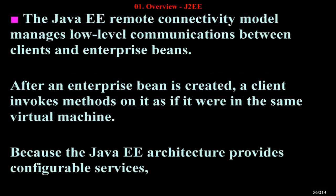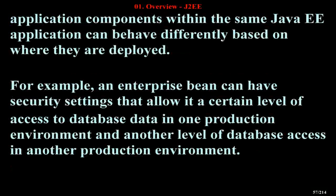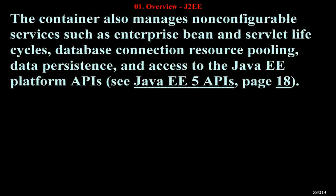After an enterprise bean is created, a client invokes methods on it as if it were in the same virtual machine. Because the Java EE architecture provides configurable services, application components within the same Java EE application can behave differently based on where they are deployed. For example, an enterprise bean can have security settings that allow it a certain level of access to database data in one production environment and another level of database access in another production environment. The container also manages non-configurable services such as enterprise bean and servlet life cycles, database connection resource pooling, data persistence, and access to the Java EE platform APIs.